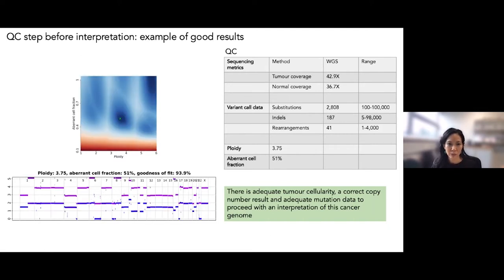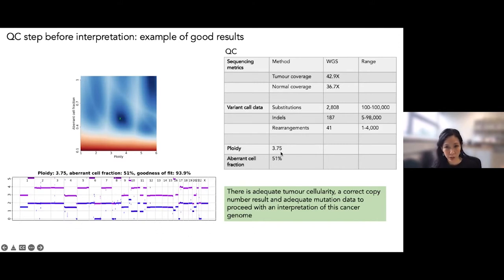Here's another example — a more complicated genome, but tumor and normal coverage looks right, total substitutions, indels and rearrangements fall within normal range. The ploidy is a bit higher, aberrant cell fraction is 51%, but this looks like a correct result with a reasonable copy number plot — some nice clean lines and clear aberrations. Whole genome duplication is not unusual in cancer. Again: adequate tumor cellularity, correct copy number result, adequate mutation data to proceed.